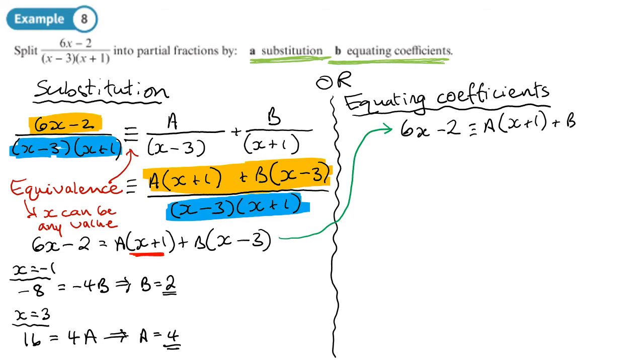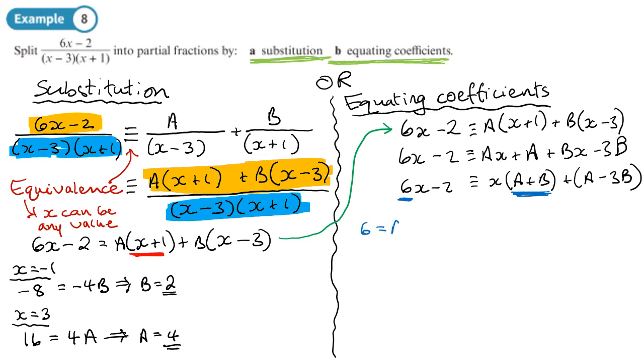Now, because we've used this equivalent sign and we've said that both sides are the same, whatever value of x, I can look at the coefficients in front of the x term or the number term or x squared term, and it should be the same on both sides. I'll show you what I mean. So I'm going to expand the brackets. On this side, I'll have ax plus a plus bx minus 3b. And what I'm going to do is I'm going to group together the x terms and the number terms. So you've got 6x minus 2 here. Here, for the x terms, I would have a plus b. For the number term, I would have a minus 3b. Now, what does that tell me? Here, the coefficient of the x term is a plus b. Now, what's the coefficient of the x term here? 6. They must be the same.